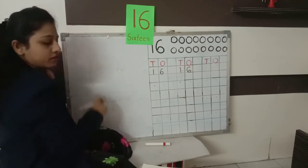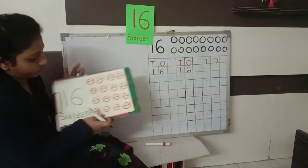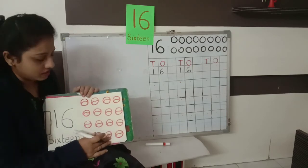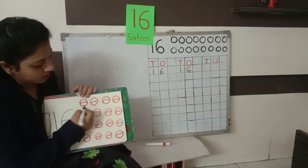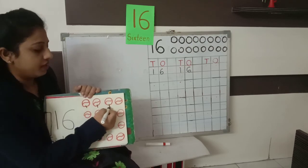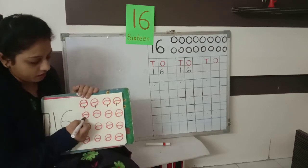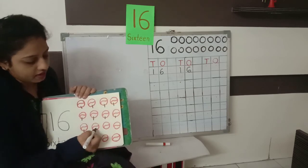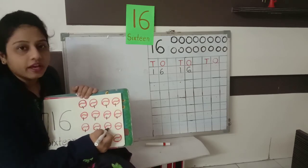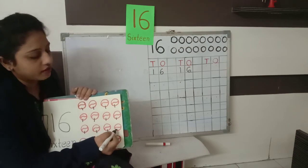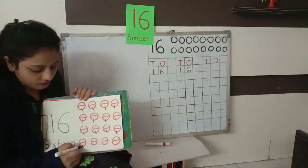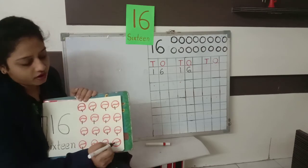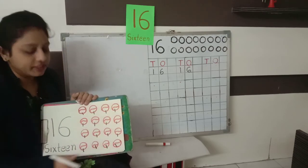So first of all, look here. What is this? So many balls. How many balls? Let's count. 1, 2, 3, 4, 5, 6, 7, 8, 9, 10, then 1-1, 11; 1-2, 12; 1-3, 13; 1-4, 14; 1-5, 15; and next 1-6, 16.